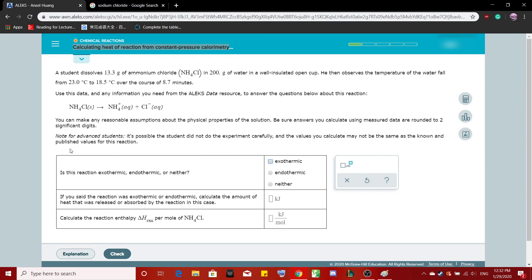Today we'll be doing calculating heat of reaction from constant pressure calorimetry data. So you start off with a student dissolves 13.3 grams of ammonium chloride in 200 grams of water in a well-insulated open cup.